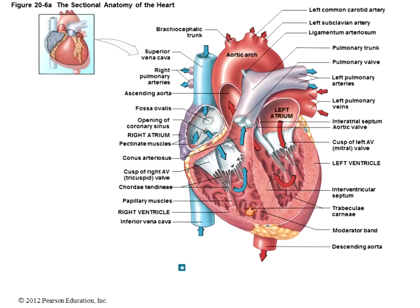One of the short answer questions on your exam will be to trace the path of blood through the heart. Starting with a deoxygenated red blood cell: superior and inferior vena cava → right atrium → tricuspid valve → right ventricle → pulmonary semilunar valve → left and right pulmonary arteries → picks up oxygen → left and right pulmonary veins → left atrium → bicuspid valve → left ventricle → aortic semilunar valve → aortic arch → rest of the body. The labeling aspect will be part of lab.